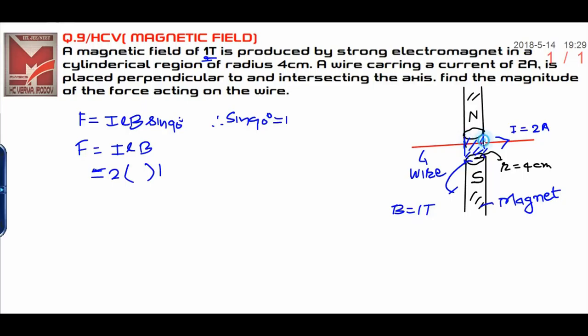As the length of the wire is not given, you have to take the length as the diameter of the cylindrical magnet, which is twice the radius.